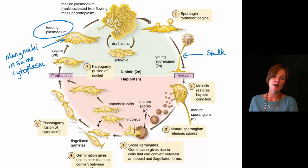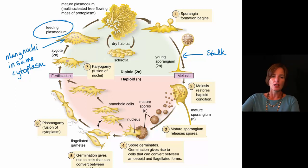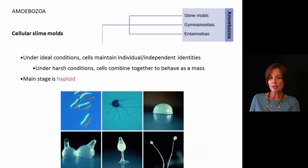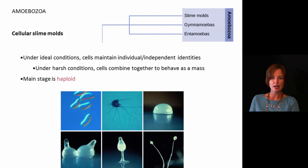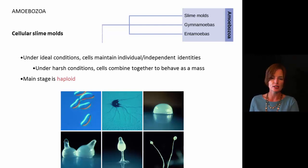The plasmodial slime mold does have mitosis, which produces a bunch of nuclei, but they stay in the same mass of cytoplasm. If we look at the cellular slime molds, they are similar in that they have that structure that looks like fungi. Under ideal conditions, they have cells that maintain their individual identities — each nucleus is going to be inside of its own cellular structure with its own plasma membrane.